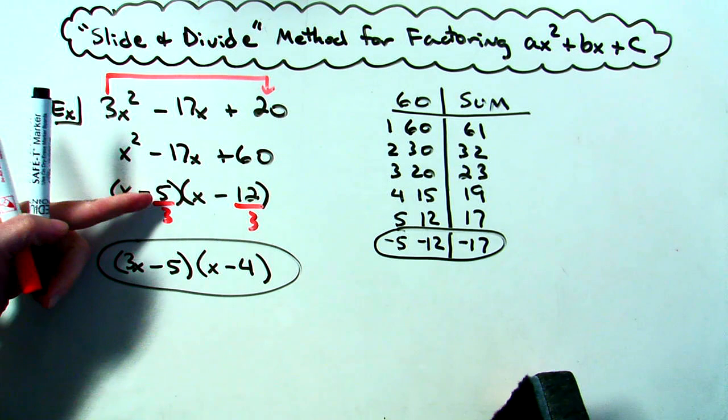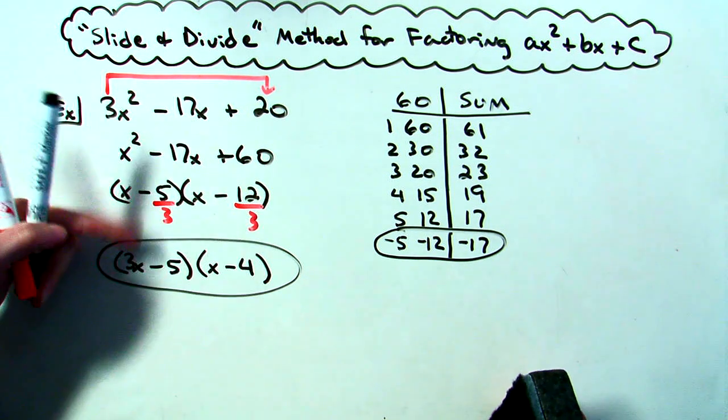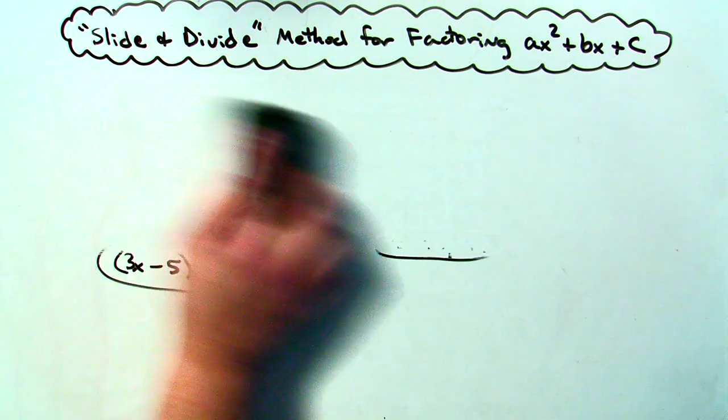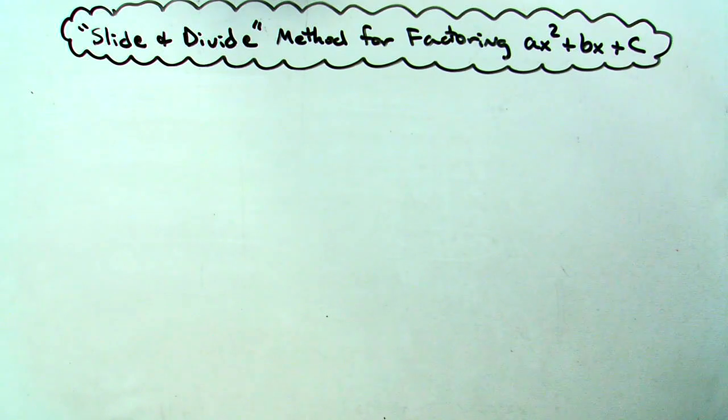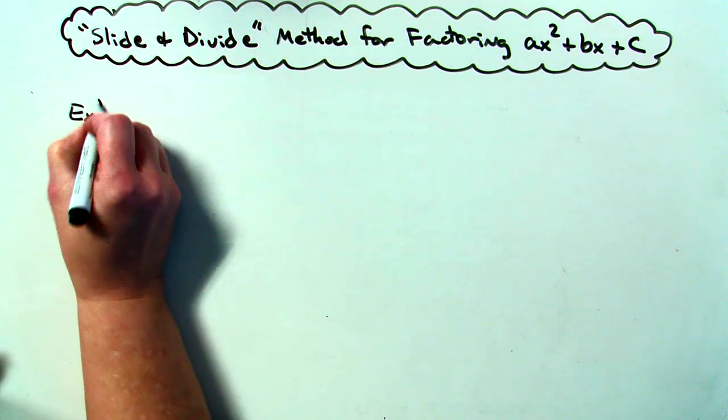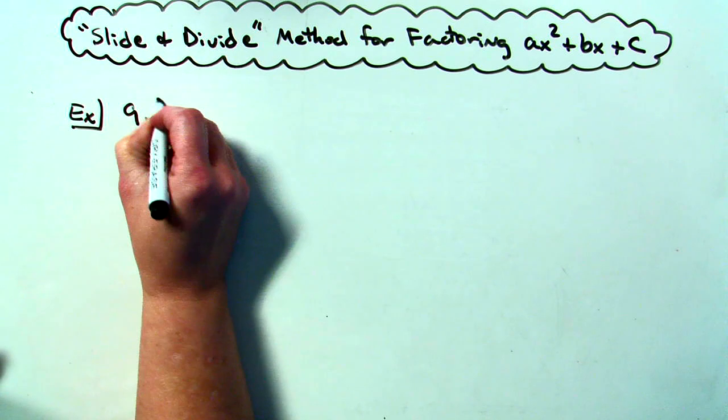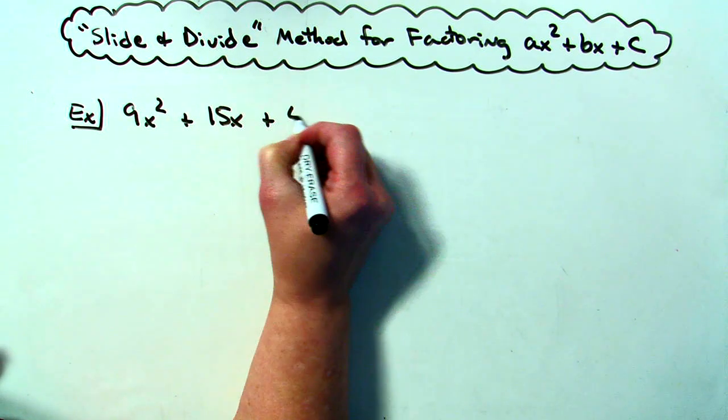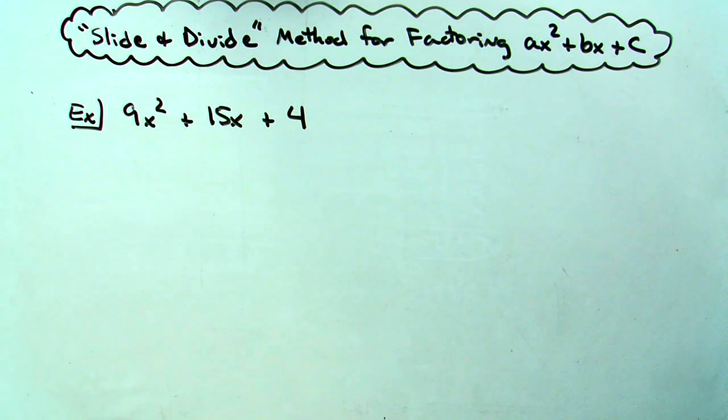Now not always will they divide out or even come up to something where I can pull it out. So let's do one more example with one additional scenario that you might run into. Let's take a look at say a 9x squared plus 15x plus 4. So slide and divide.